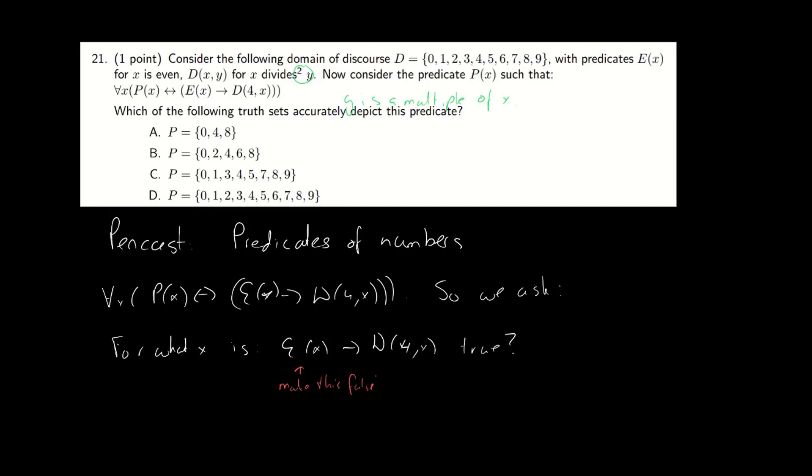So if we make that first part false, the implication holds, so we can take all of the odd numbers. So x equals one, three, five, seven, or nine.